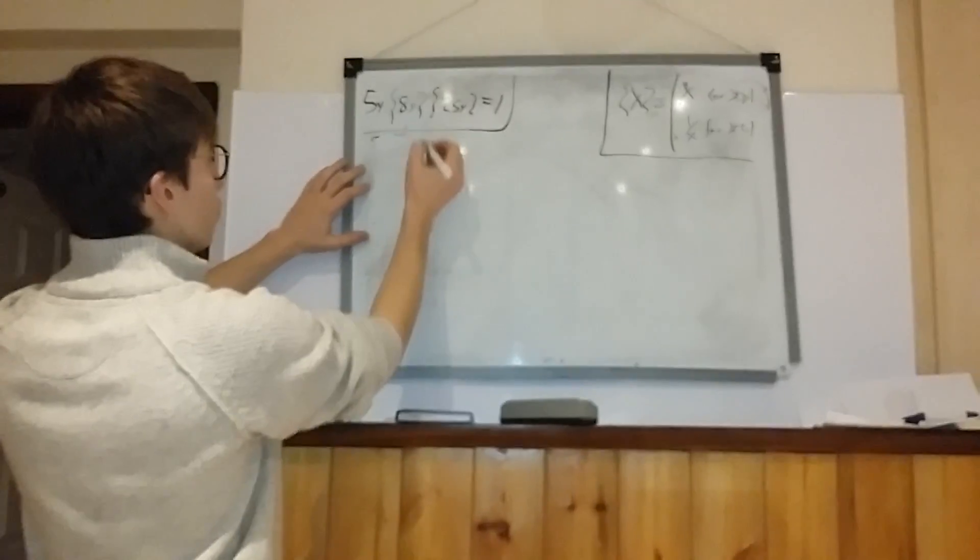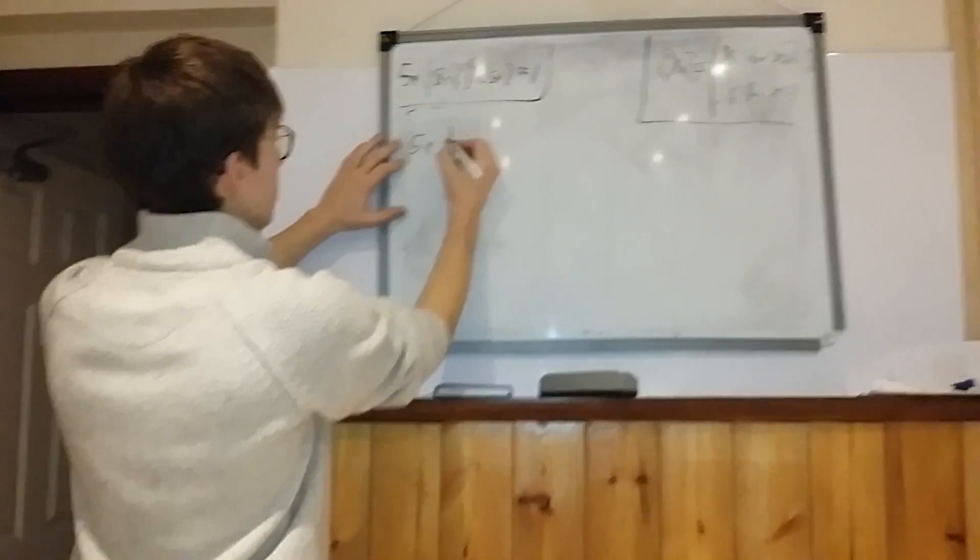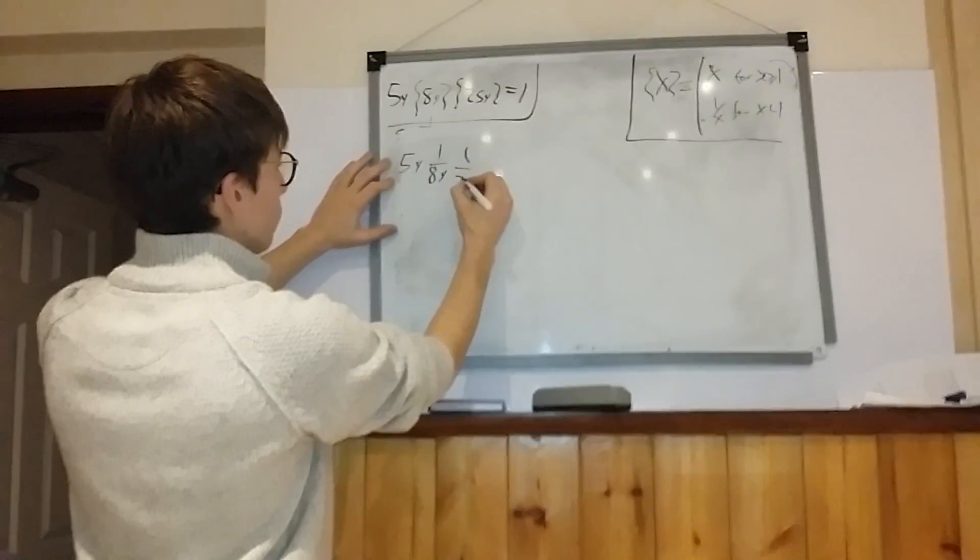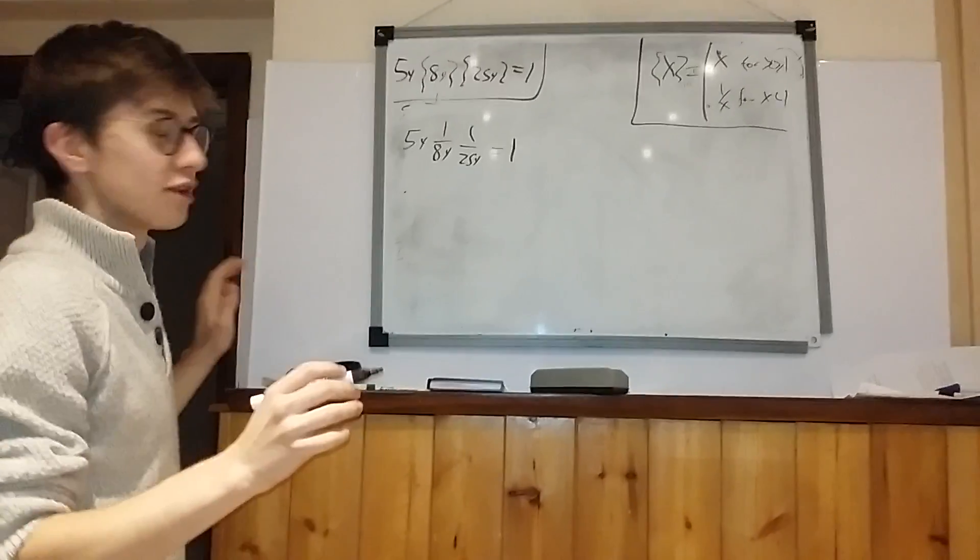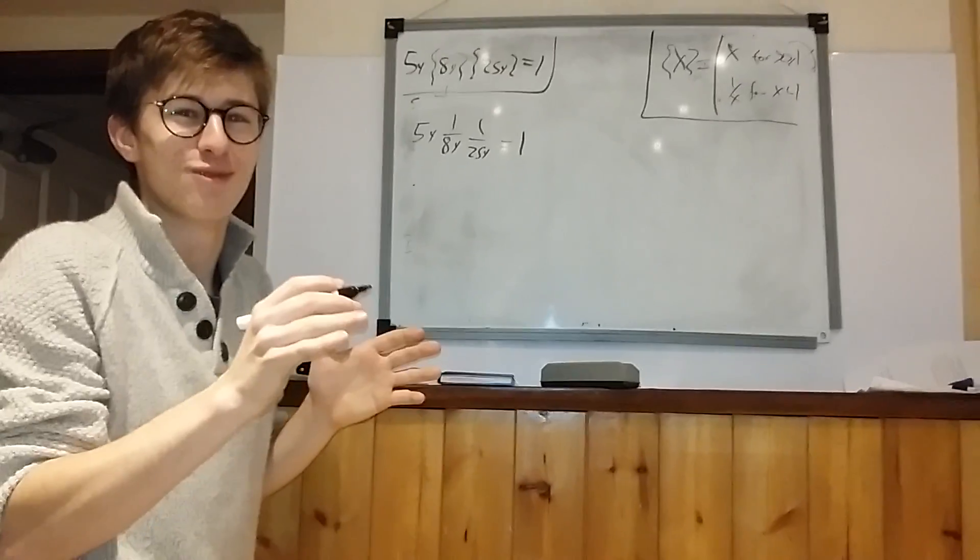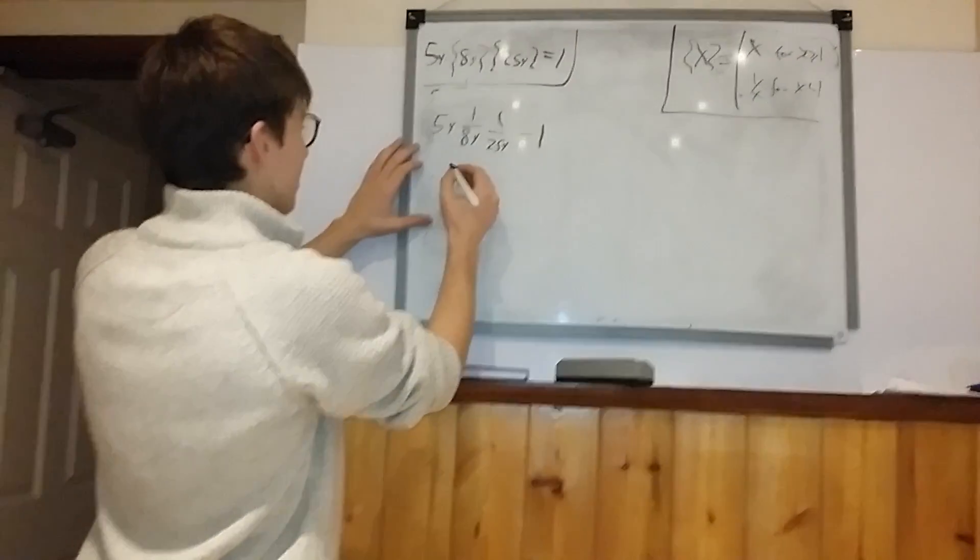And then you try 1 over both of them. So you've got 5y, 1 over 8y, 1 over 25y. That's equal to 1. I'm going to go through this slowly. Multiply top and bottom by 5. No, I'm not.